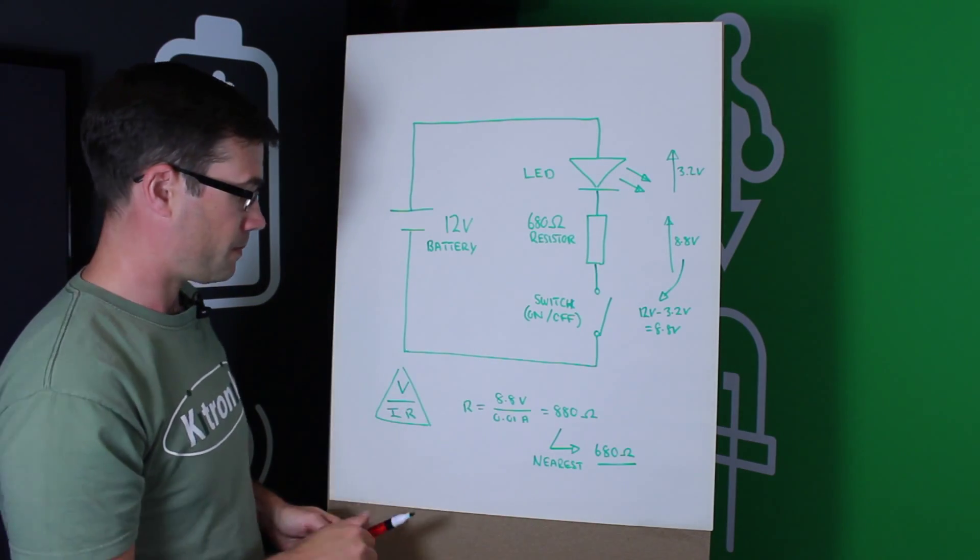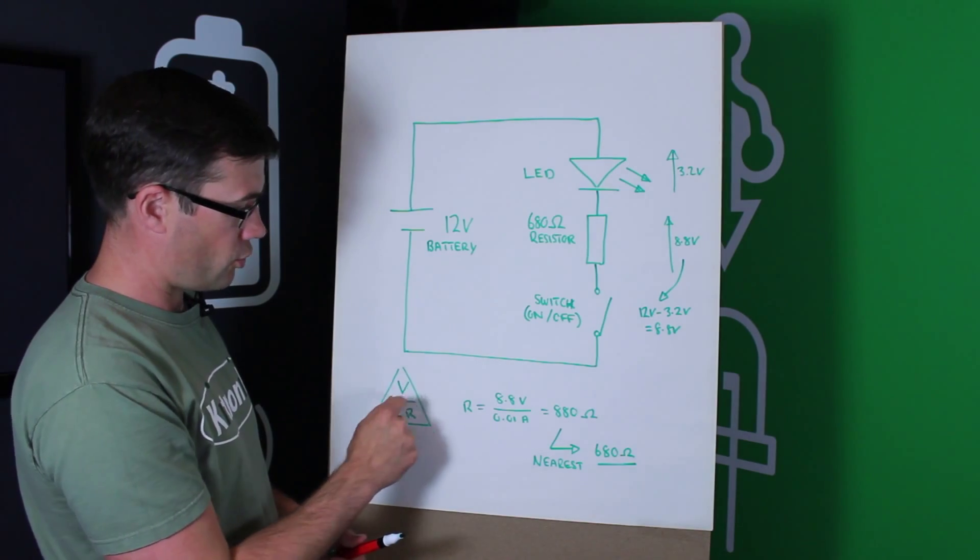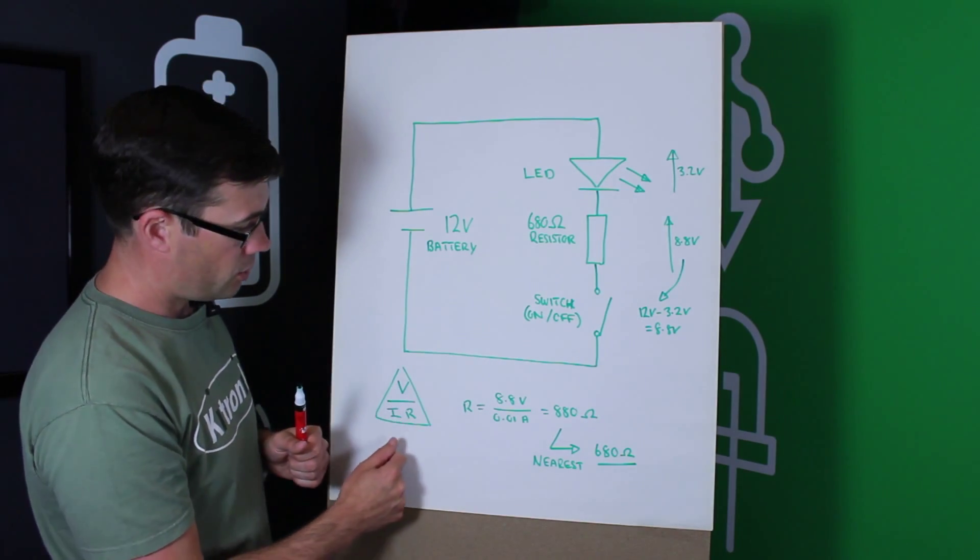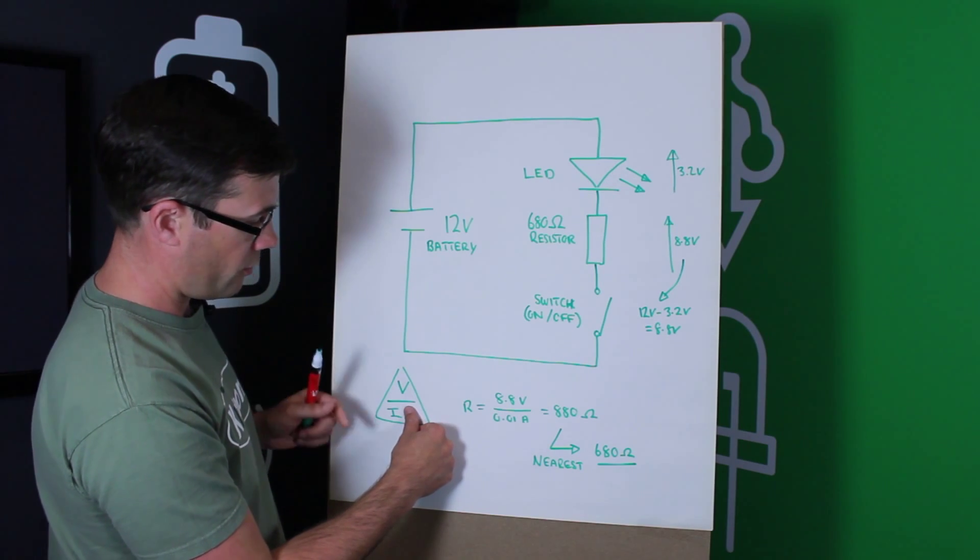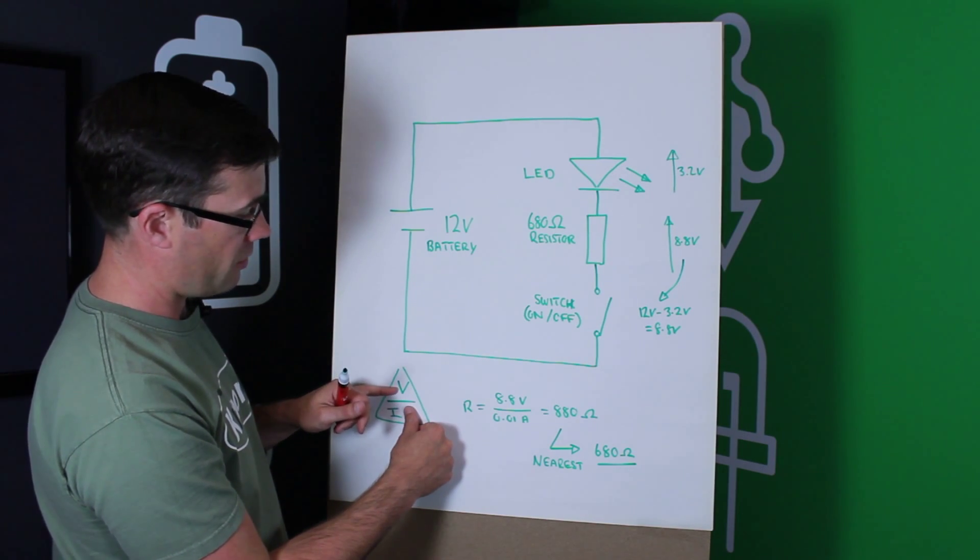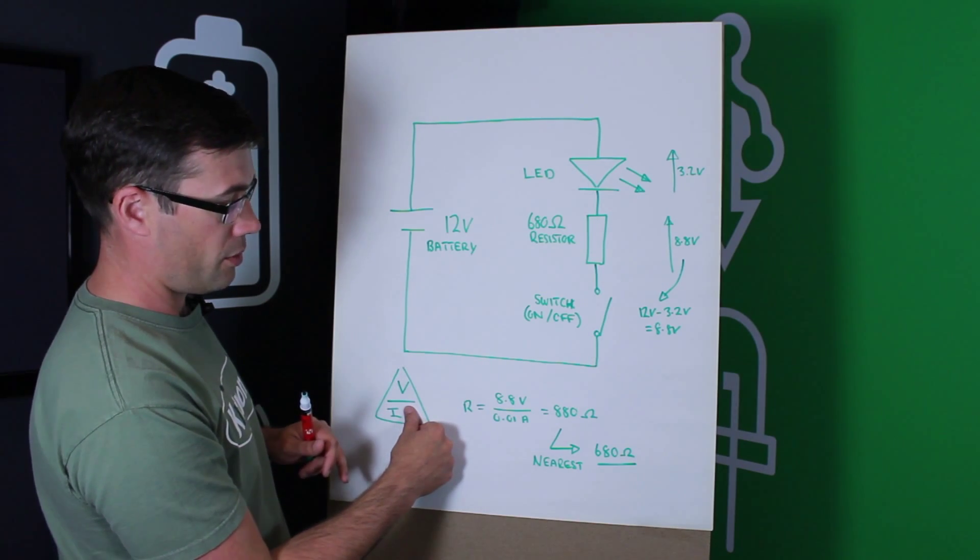So, Ohm's law, we can see arranged here. V equals I times R. Arranging this little triangle is quite useful. So, we know that if we're trying to calculate the resistance, we can cover that over, that we need to divide the voltage across that resistor by the required current.